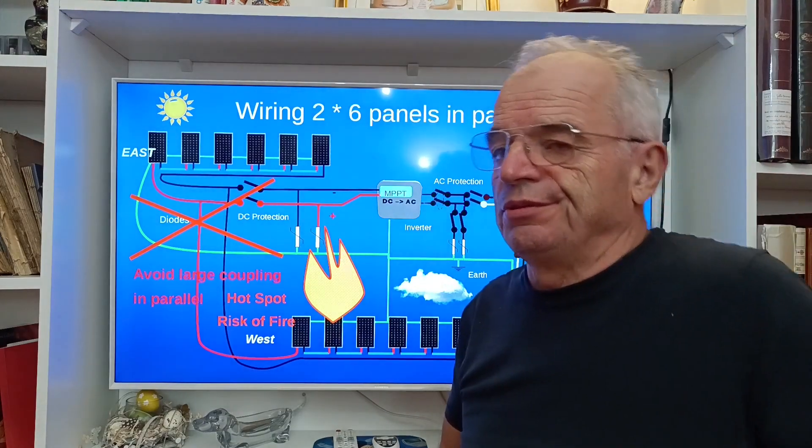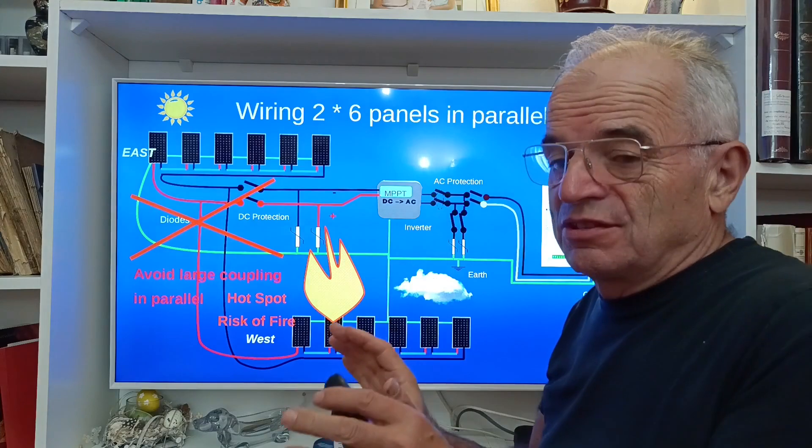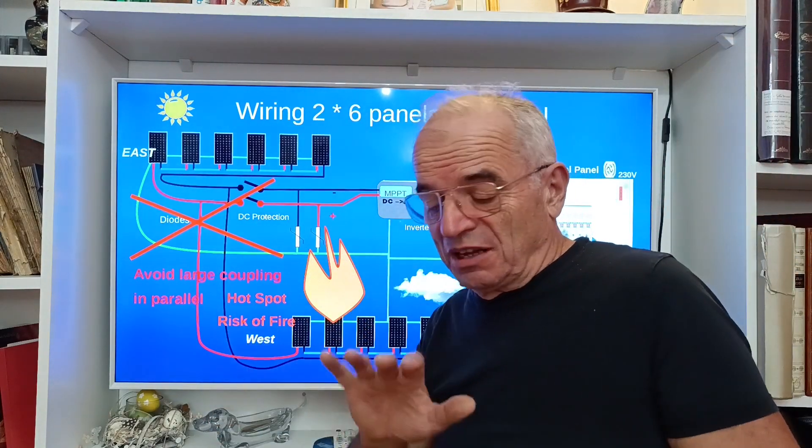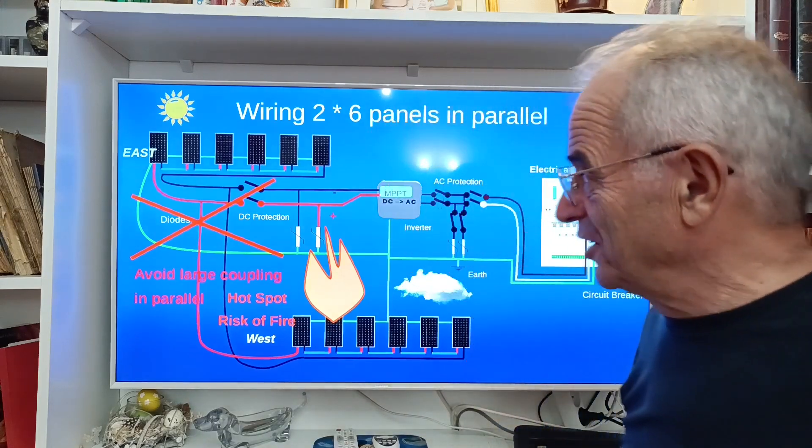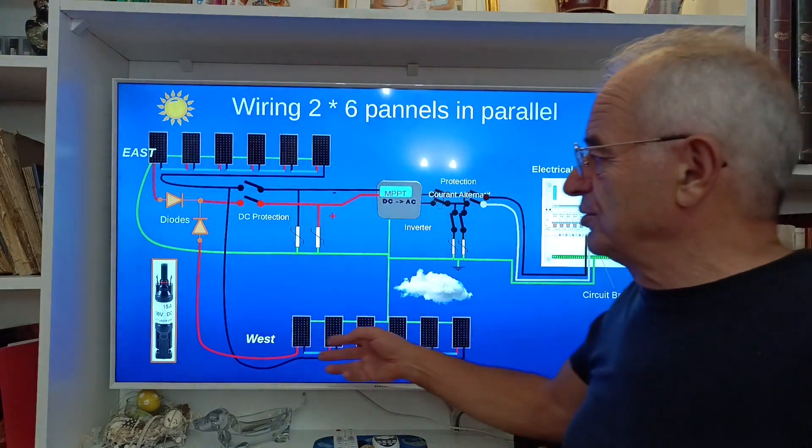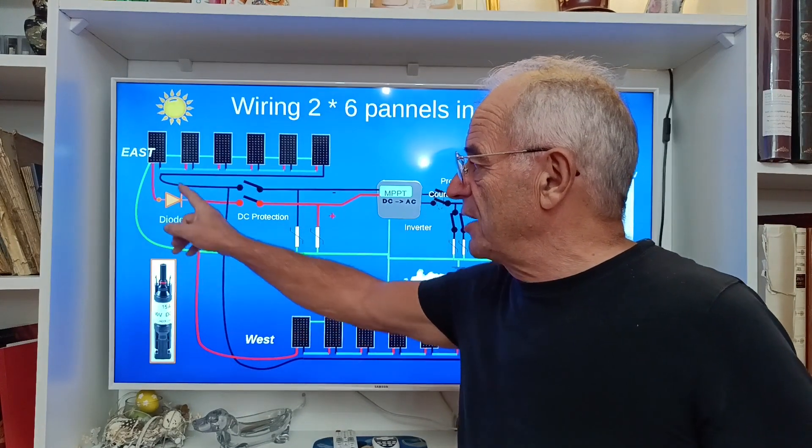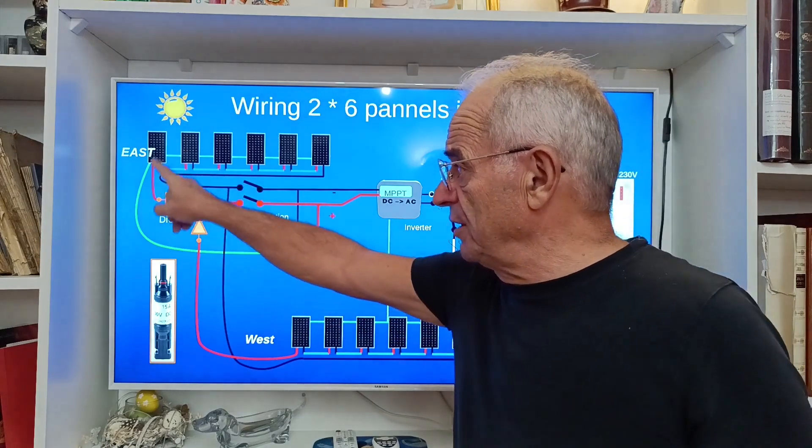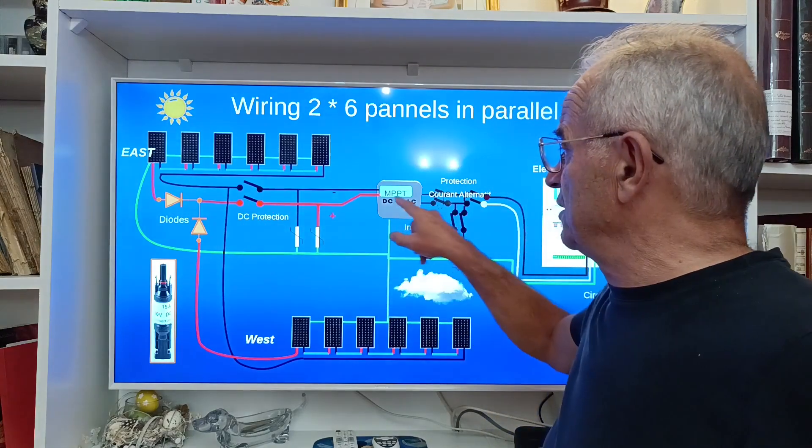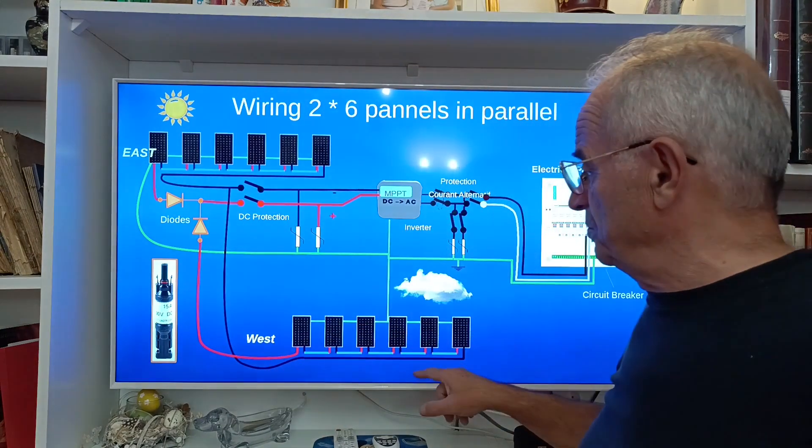You can put one, two, at least three panels in parallel when they are roughly in the same situation with the same solar coverage, same sun coverage, so you have less risk. To solve this issue, there is also a solution which is to put diodes. Because if you put diodes, the energy produced by this group will go directly to the inverter here and not to this group.